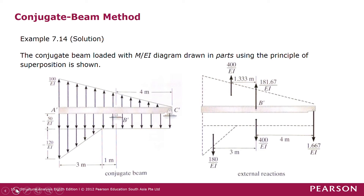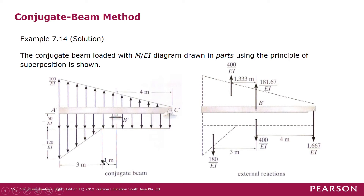The first step is to draw the bending moment diagram since we need the M over EI diagram as loading on the conjugate beam. In the conjugate beam, the fixed end at A becomes a free end, the hinge at B becomes an internal roller, and the rocker at C remains a rocker. So the conjugate beam becomes an overhanging beam. We use the principle of superposition by drawing the bending moment diagram in parts.